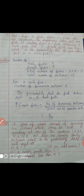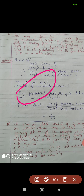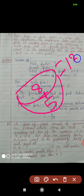Gopi buys a fish from a shop for his aquarium. The shopkeeper takes out one fish at random from a tank containing 5 male fish and 8 female fish. So in a container, there are 8 female fish and 5 male fishes. So the total fishes in the container are 8 plus 5 equal to 13. Total number of outcomes equal to 13.